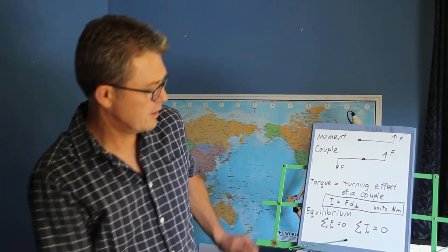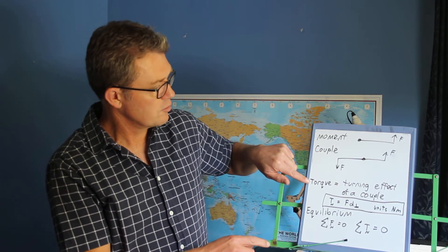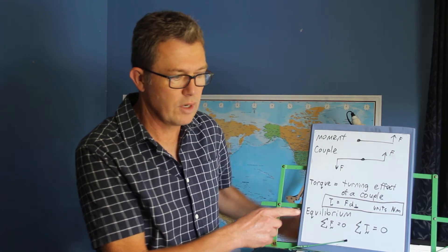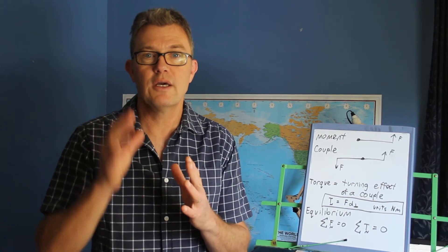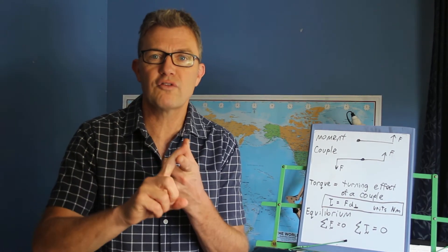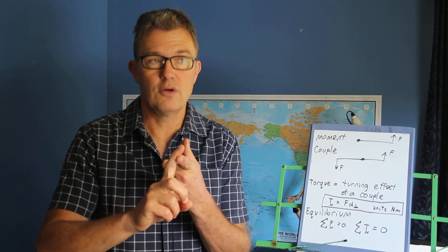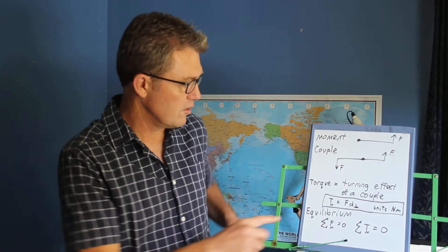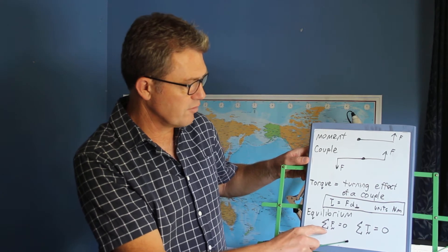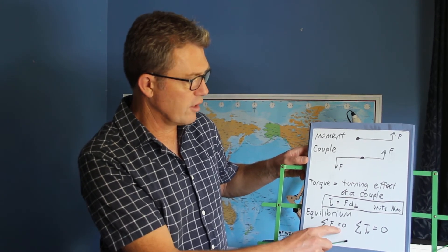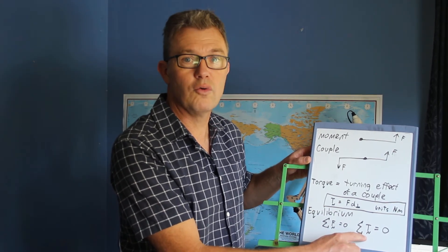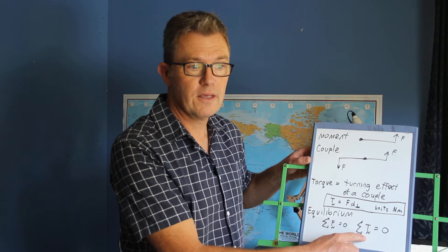Final point. We've had moment, couple, torque. Final point is equilibrium. What is equilibrium? Well, an object is in equilibrium if it's not moving, or if it's moving at a constant speed in a straight line, all the forces are equal and opposite. All the forces add to zero. The sum of the forces, this sign here means sum of, the sum of the forces is zero. But what you also need to know is the vector sum of the torques, or moments, equals zero.